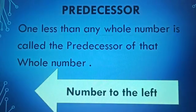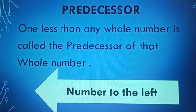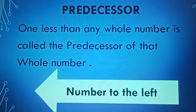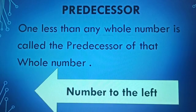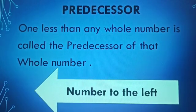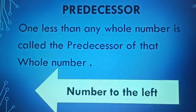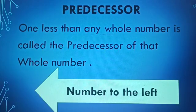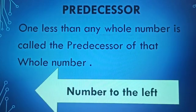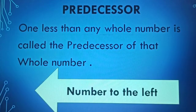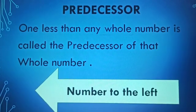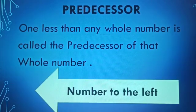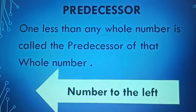Now, we will discuss predecessor. One less than any whole number is called the predecessor of that whole number. In other words, we can say that the number which is written to the left of the given number is the predecessor of that number.